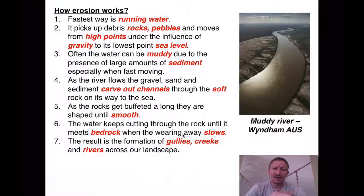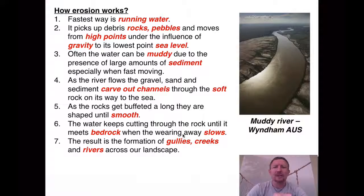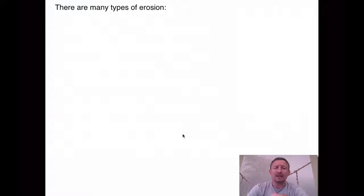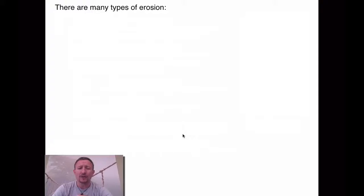On the outside of the bend the banks are quite shallow, and you get little beaches where sediment lays down. Eventually, that fast-moving water will cut through the rock until it reaches the main bedrock, which is really, really hard. At that point the erosion will begin to slow down because that rock is tough to get through. As a result, we have a variety of different types of erosion due to this movement of mainly water.